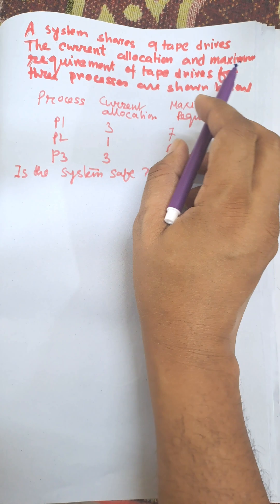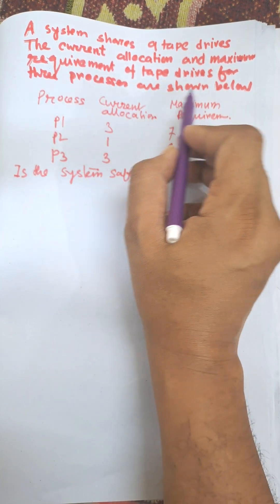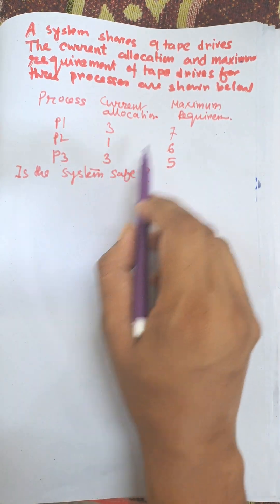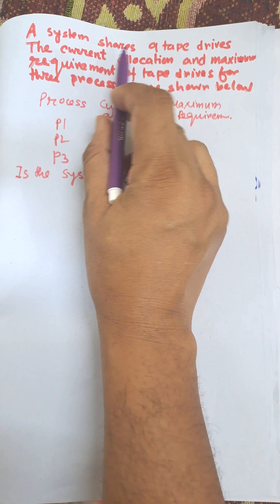The current allocation and maximum requirement of tape drives for each process is given below. The total tapes equal nine.